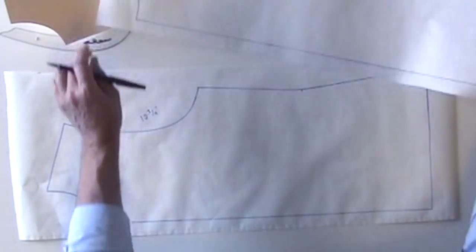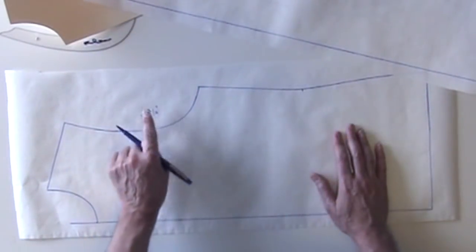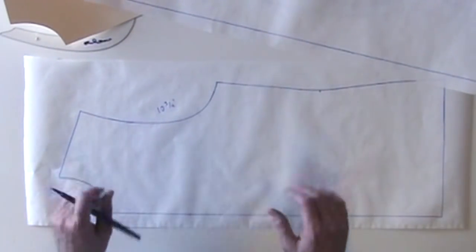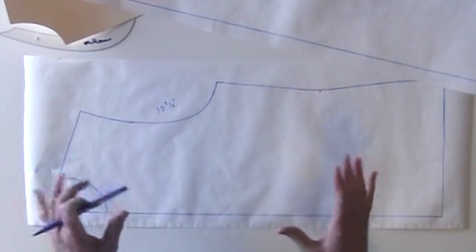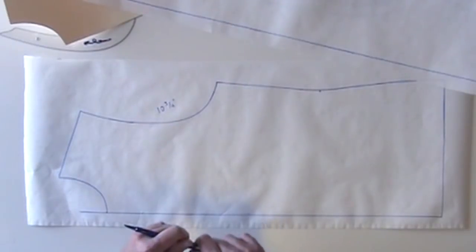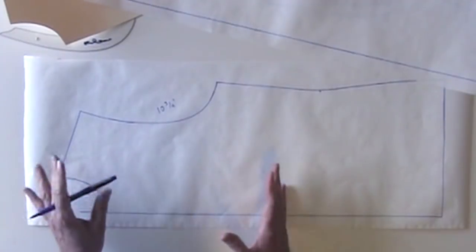And our front armhole measures 10 and 3 quarters, so that's a half inch bigger than the back, and we can't keep it that way. A front armhole cannot be bigger than the back armhole. That messes up the balance of your armhole as well as any sleeve that you're going to sew into it. They need to be the same.